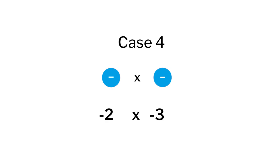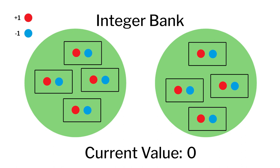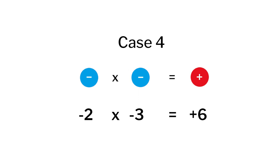In case 4, we will be multiplying two negative integers — both 2 and 3 are negative here. We will use the integer bank with several zero pairs. Since 2 is negative, we will be removing three blue pins each from two cutouts from the integer bank. To do so, we will have to break the zero sets. When we count the balance, we will have a few zero sets and 6 red pins left on the integer bank — the balance will be positive 6. When the students noted down the signs of the multiplier, multiplicand, and the product or answer, they were surprised and excited to know that a negative into a negative gives a positive.